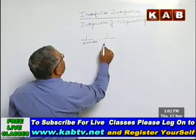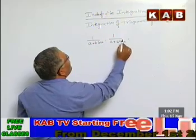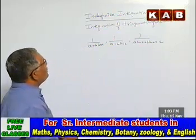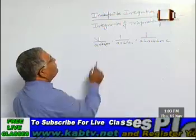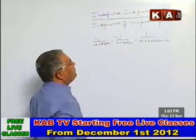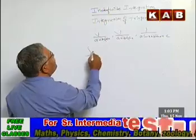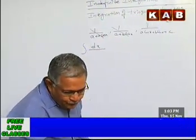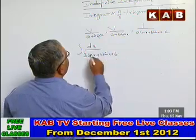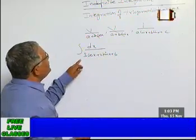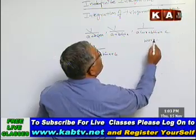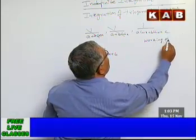We are looking at models of integration. We have seen questions of the form (a cos x + b sin x) / (a + b sin x) and similar forms. Now we are taking up the integral dx / (3 cos x + 4 sin x + 6). This is the integral we are supposed to find. Let me recollect and revise the working method.